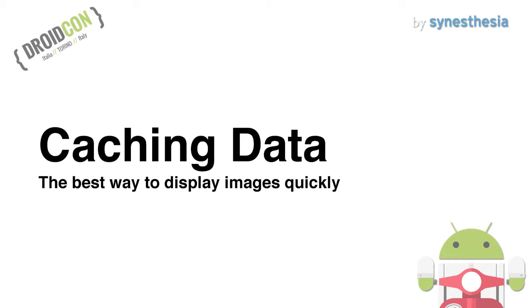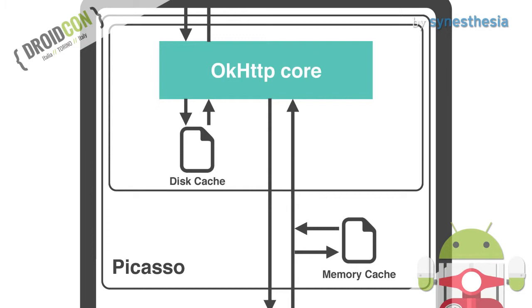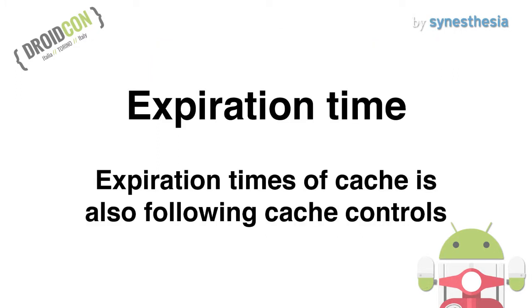Again, caching data — cache is the best way to display content quickly. Picasso has two caches: memory cache and disk cache. The disk cache is a function of OkHttp. Picasso can use OkHttp as an image downloader. Expiration times of cache also follow Cache-Control. Picasso sets up cache automatically, so you don't need to do anything to enable cache.